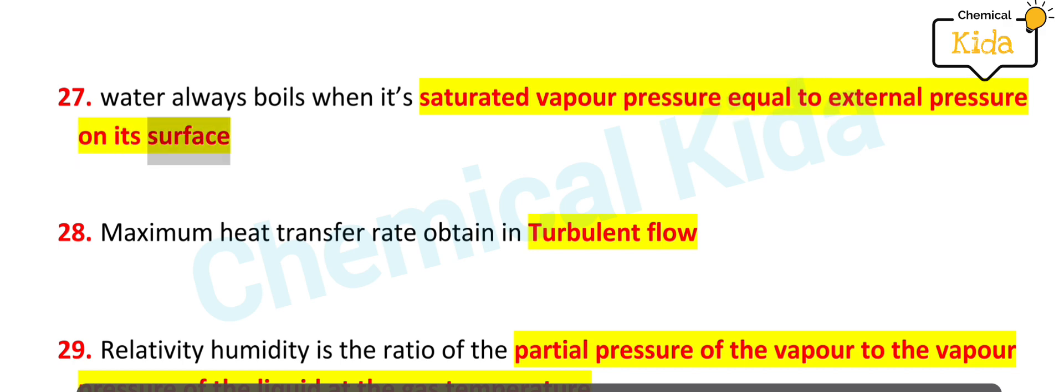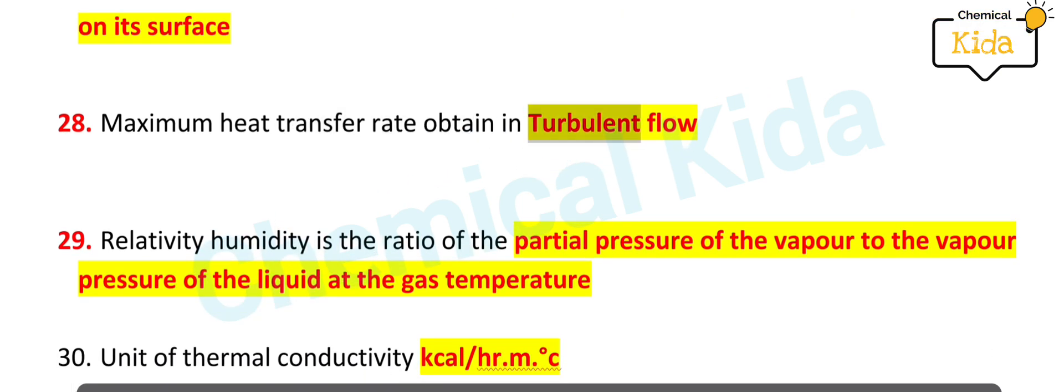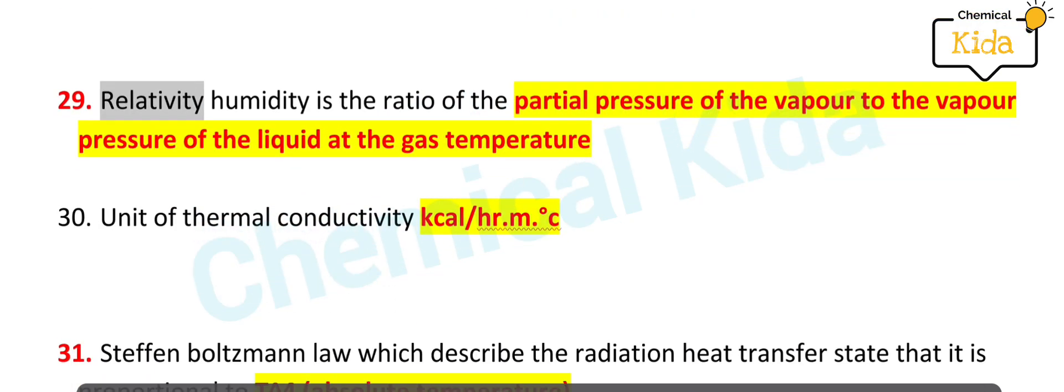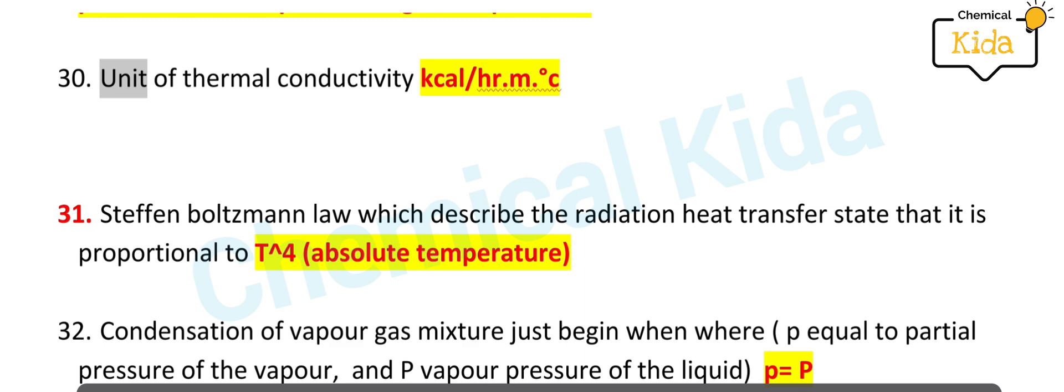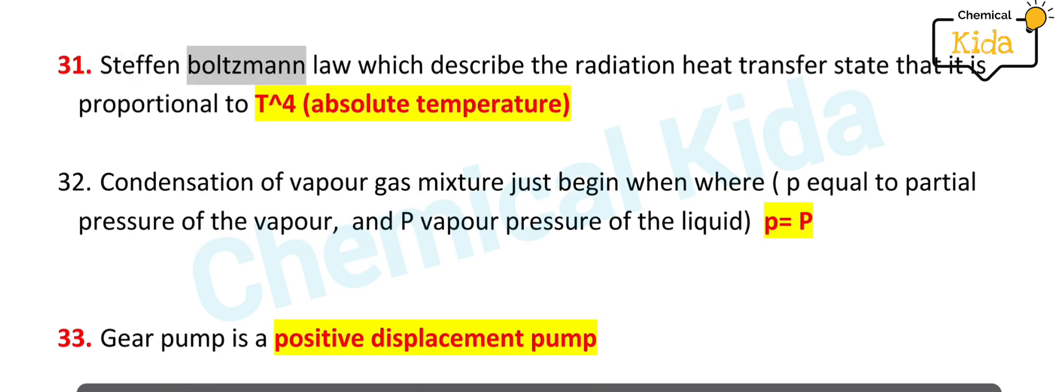Maximum heat transfer rate obtained in turbulent flow. Relative humidity is the ratio of the partial pressure of the vapor to the vapor pressure of the liquid at the gas temperature. Unit of thermal conductivity: kcal per hr·m·°C. Stefan-Boltzmann law, which describes the radiation heat transfer, states that it is proportional to T⁴ absolute temperature.